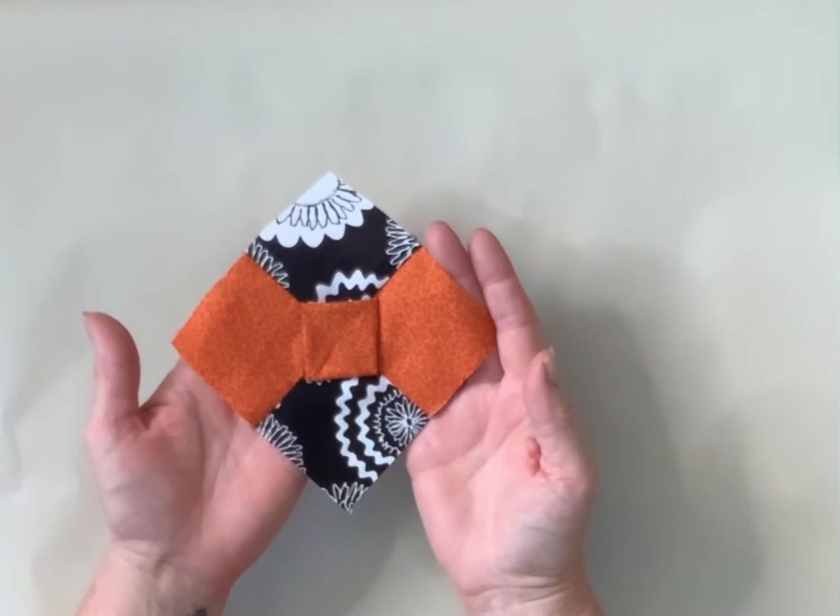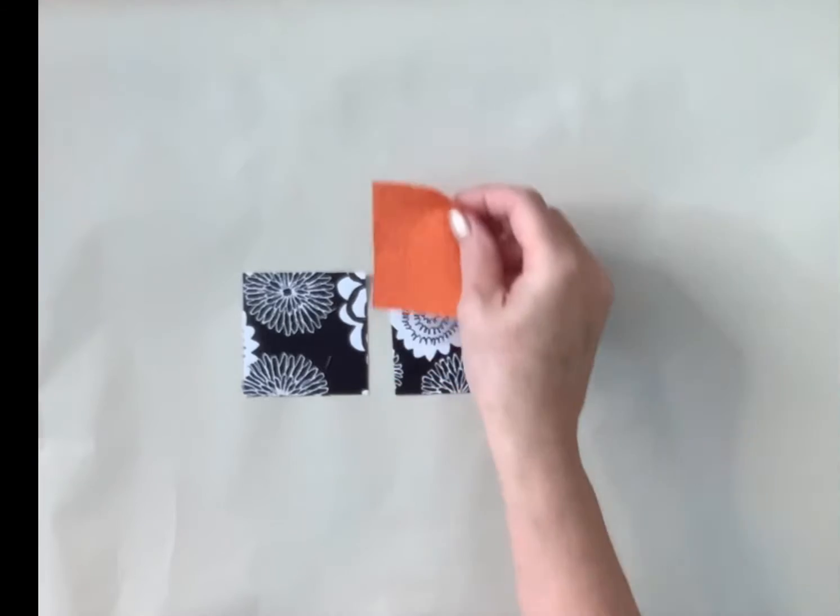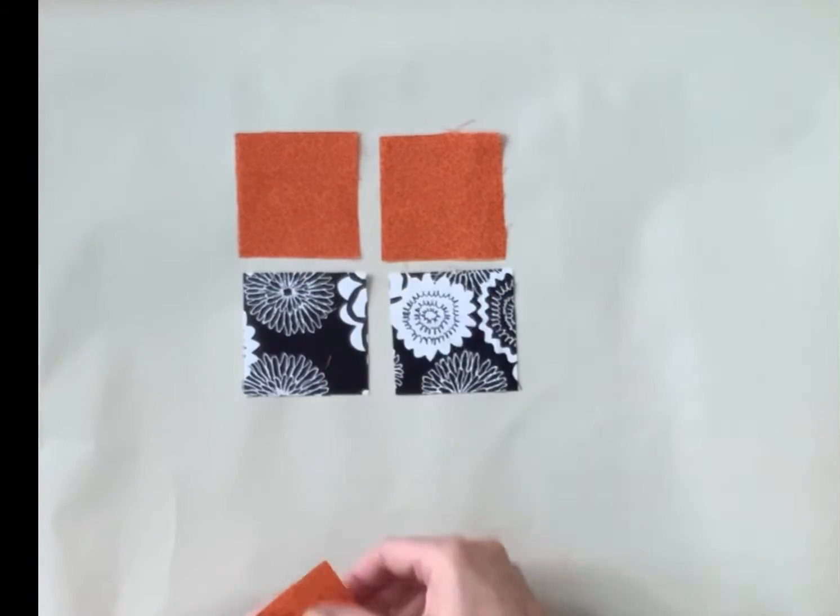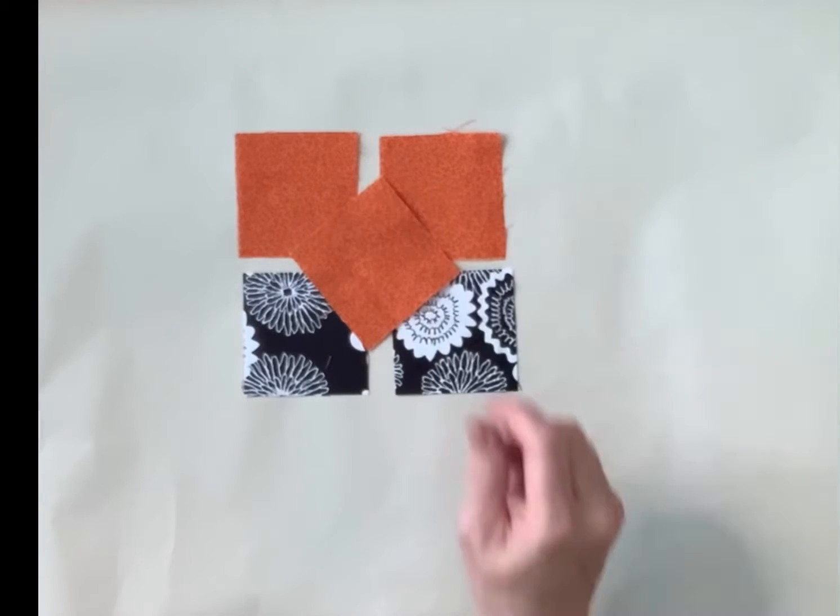This is what you need. You need two pieces of background fabric and three pieces of your bow tie. These will be the back and then this will be the centre of your bow tie.